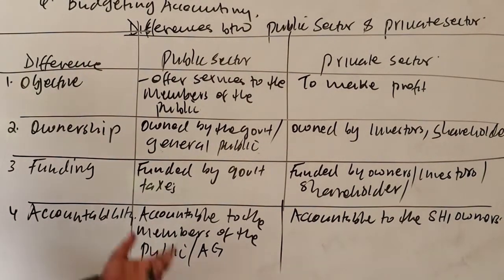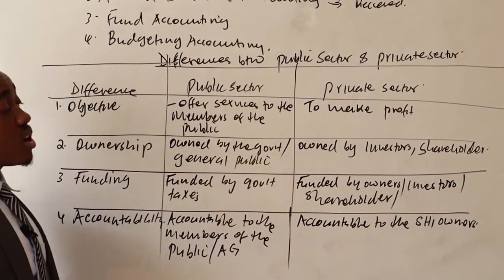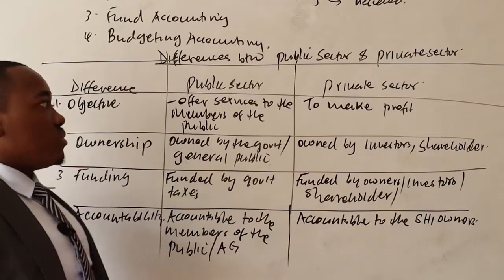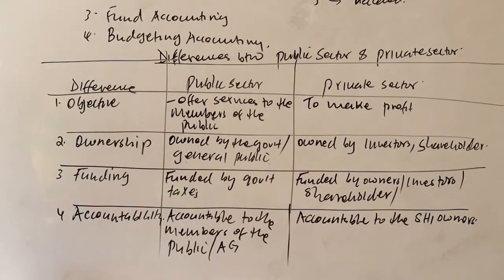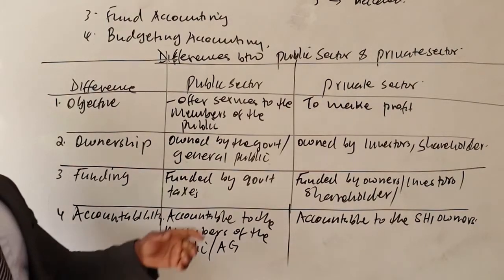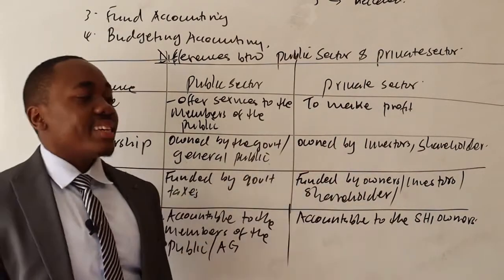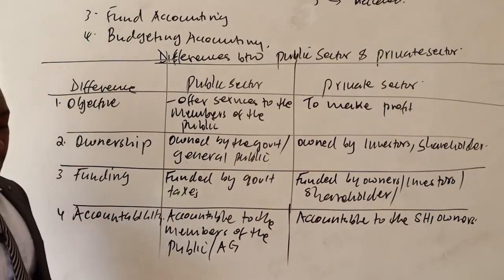Those are some of the differences: objective, ownership, funding, and accountability. You can also note that for accounting standards, the private sector majorly uses the accrual basis, while the public sector mostly uses the cash basis. Also, the public sector is regulated by IPSAS — International Public Sector Accounting Standards — while the private sector is regulated by IAS — International Accounting Standards.